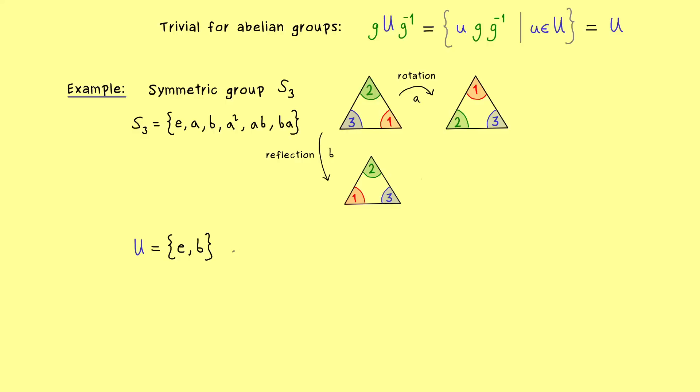And with that we are ready to consider the conjugate subgroups of U. So for example our element g could be given by a. So we have aUa inverse and we already know U only consists of two elements. Of course the identity stays the identity but our second element can do something. So we have aba inverse and there you should know that a inverse is equal to a squared.